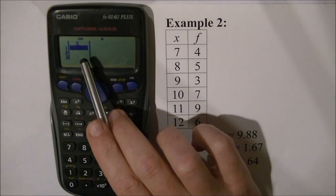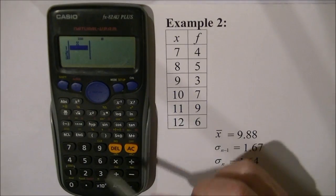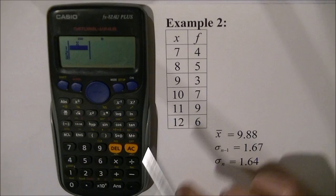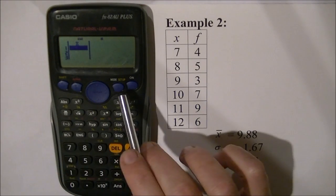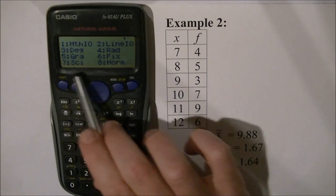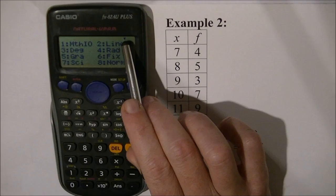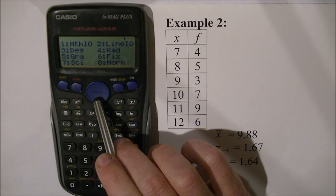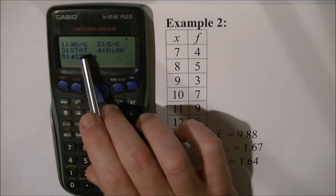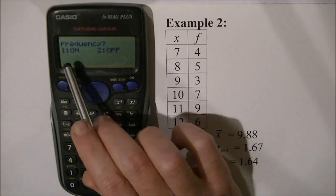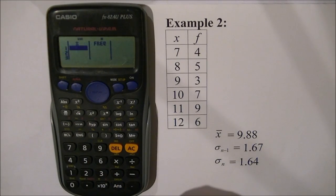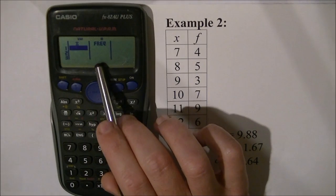Now I could enter the number seven four times and the number eight five times, but this calculator allows you to set up a frequency column. The buttons I'll use are shift and mode. When I press shift and mode I have a big set of menus, and there's a little up arrow indicating there's more to see. I press the down key on the replay button and I have the option for statistics, number three. I press three and it asks if I want the frequency column on or off — I press one to turn it on. Now I have a score column and a frequency column.